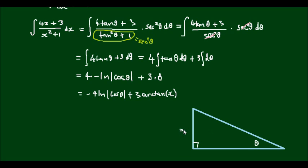If I call the opposite side x and I call the adjacent side 1, then by Pythagoras' theorem, the length of the hypotenuse is x squared plus 1 square rooted. Or I should say the square root of x squared plus 1.